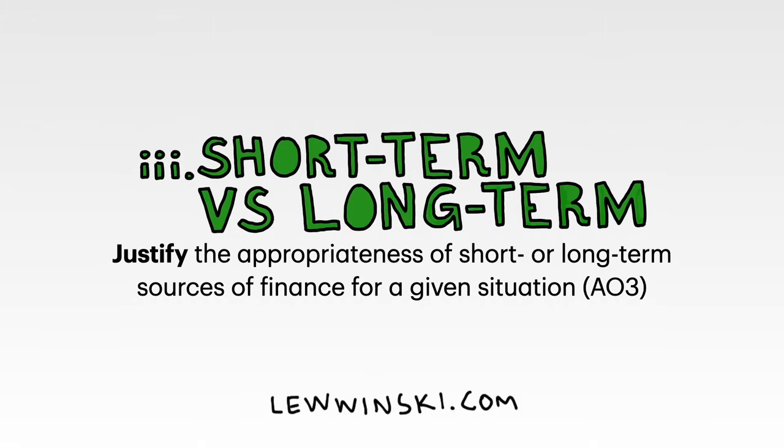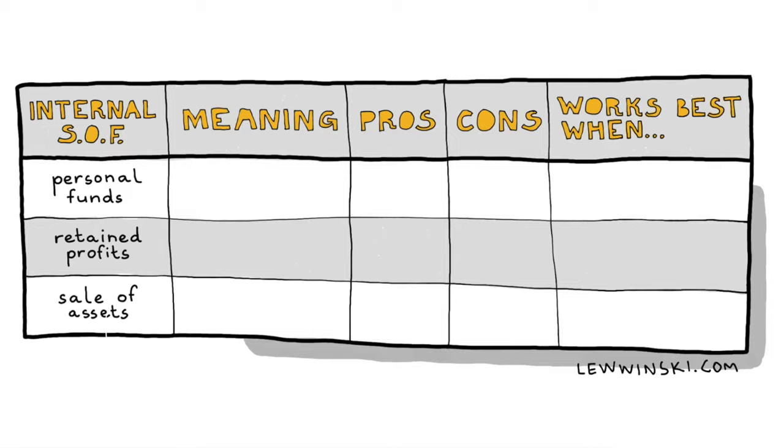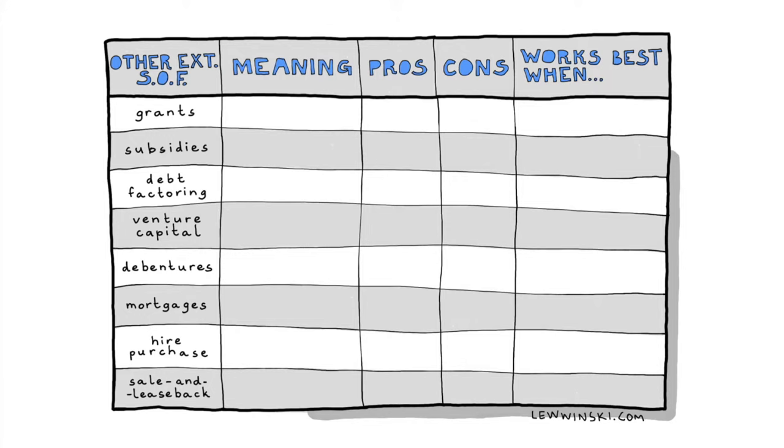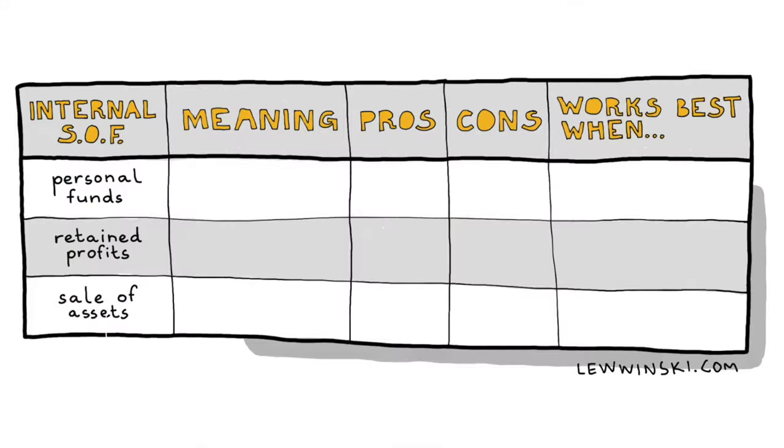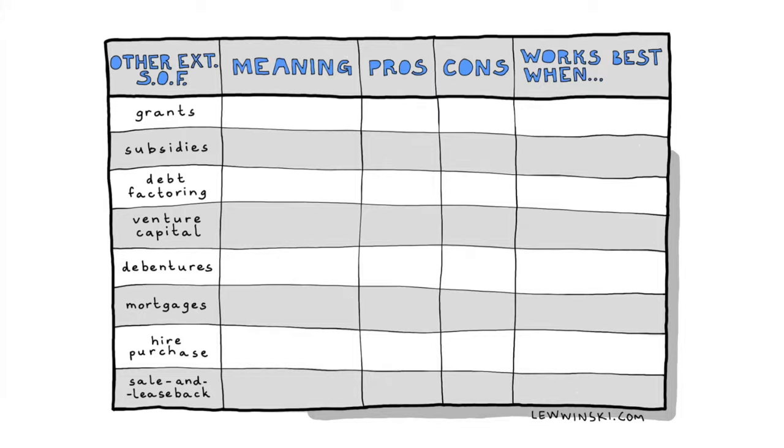Now you know the difference between short-term and long-term sources of finance. The next stage is appropriateness — this is what comes from our assessment objective: to justify the appropriateness of different sources of finance. You know eight external sources, three internal sources, and probably eight more additional ones. You can categorize them into short-term and long-term when you have enough data, and then make judgments using the pros, cons, and 'when it works best' columns from your tables.